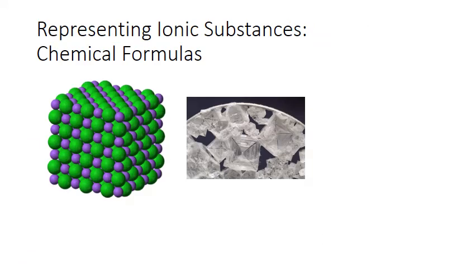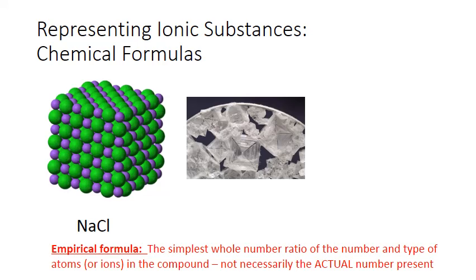Now let's look at ionic compound formulas. This is a space-filling model for sodium chloride crystal, and this is the correct chemical formula for sodium chloride. As the space-filling model shows, sodium and chlorine ions don't exist in individual pairs — they're part of a large crystal lattice. The formula represents only the smallest representative unit, known as an empirical formula: the simplest whole number ratio of the atoms or ions in the compound. It's not necessarily the actual number present.